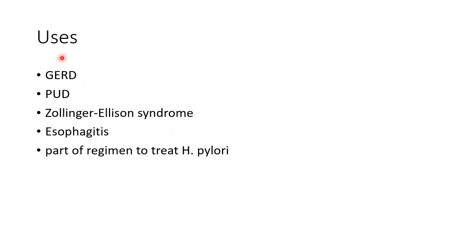Now let us see about the uses of proton pump inhibitors. They are used in the treatment of gastroesophageal reflux disease, peptic ulcer disease, Zollinger-Ellison syndrome, and esophagitis. They are also a part of the regimen to treat Helicobacter pylori infection.